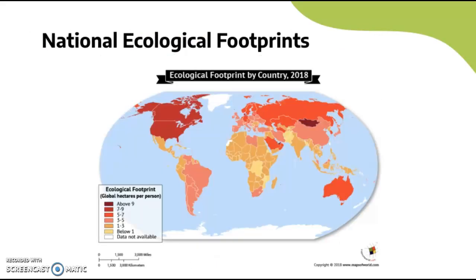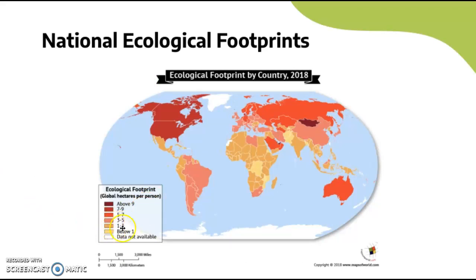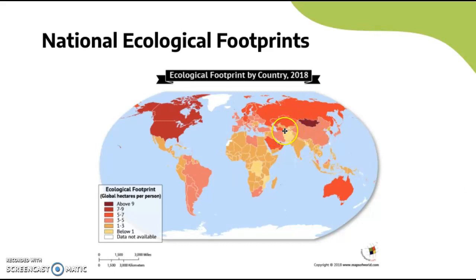On the national ecological footprint map: above 9 global hectares includes Mongolia and parts of the Middle East. Seven to nine includes North America, Australia, Russia, and parts of Europe and the Middle East. Five to seven is similar regions. Three to five includes South America, China, parts of northern Africa, western Asia, and much of Europe. The lowest — below one to three — includes much of Africa, particularly central Africa.